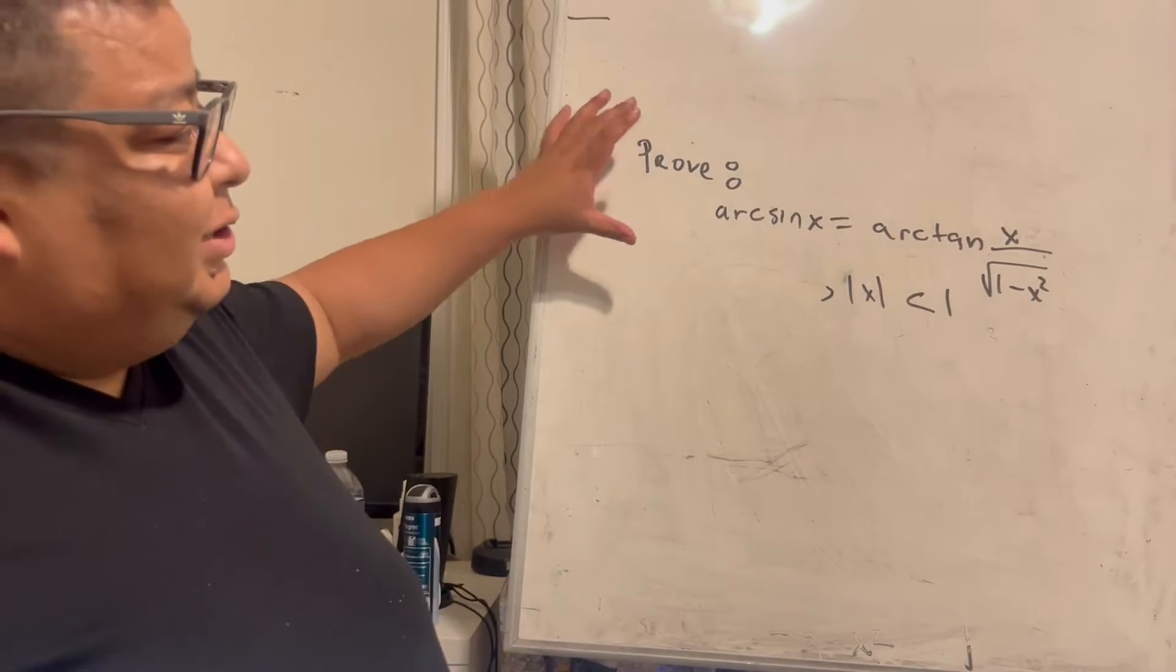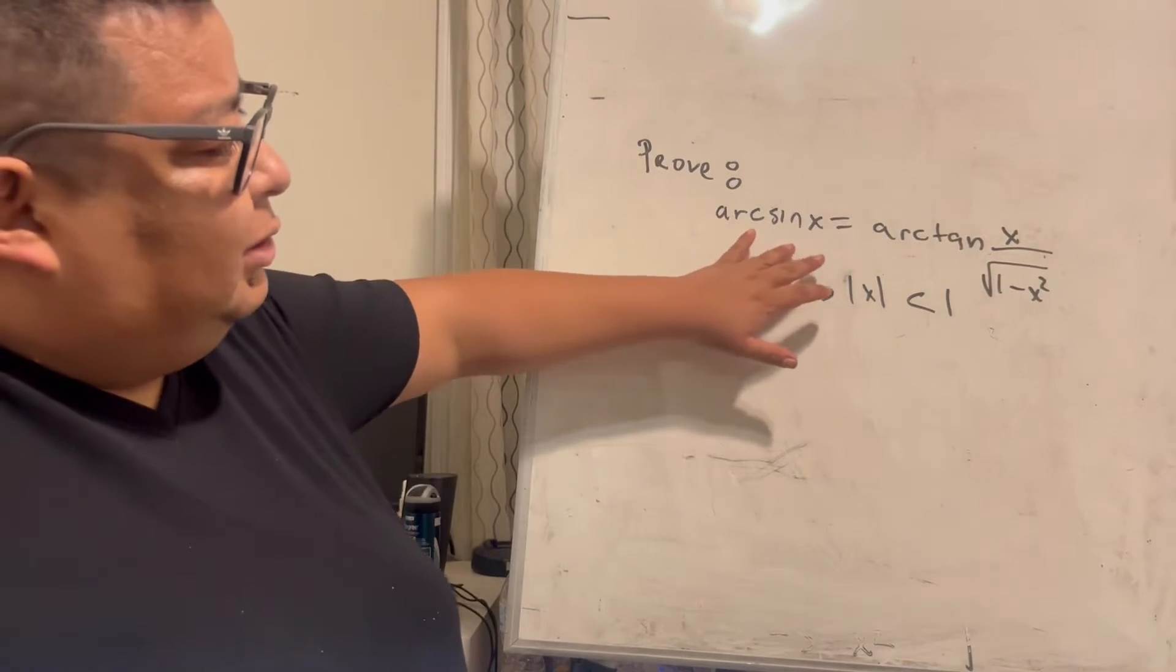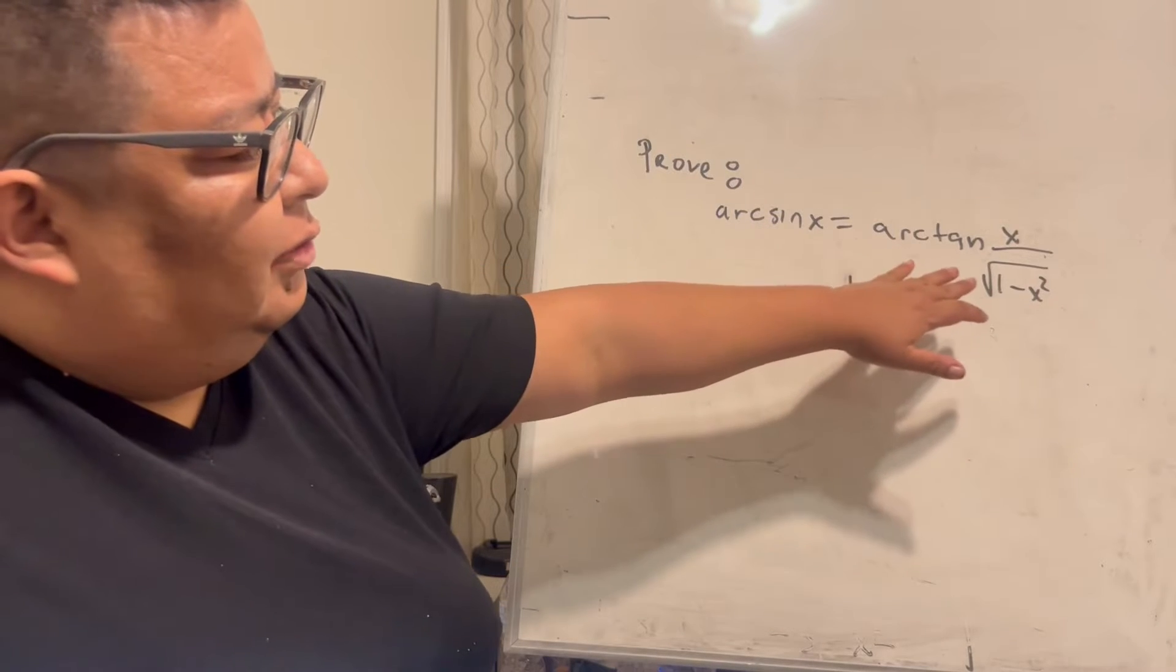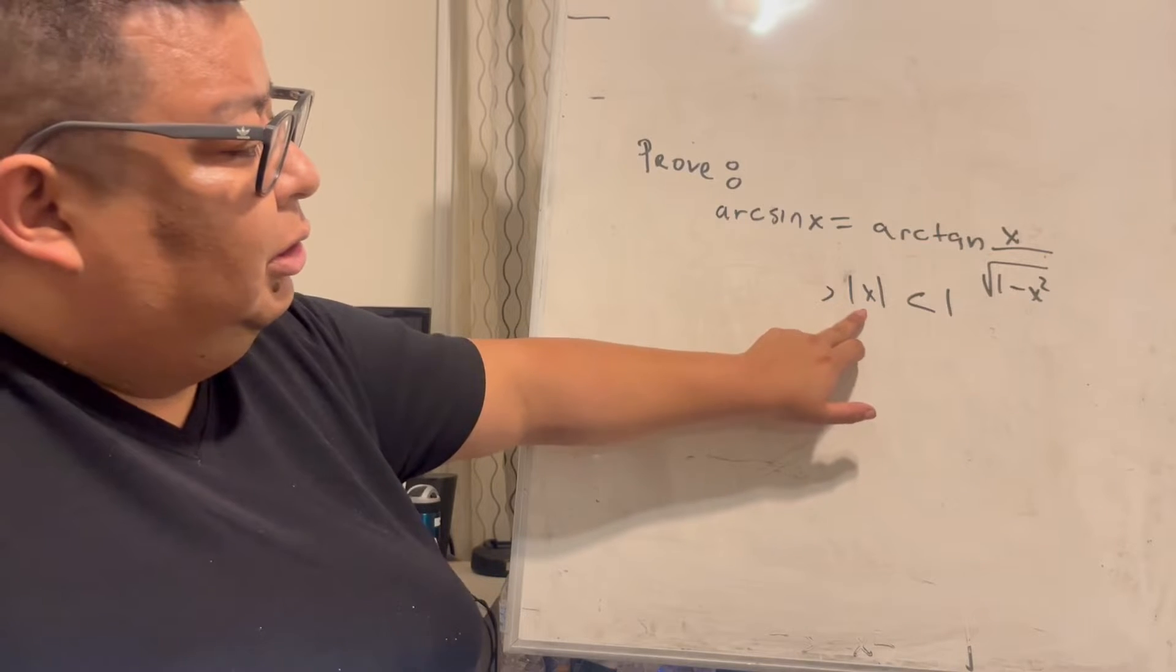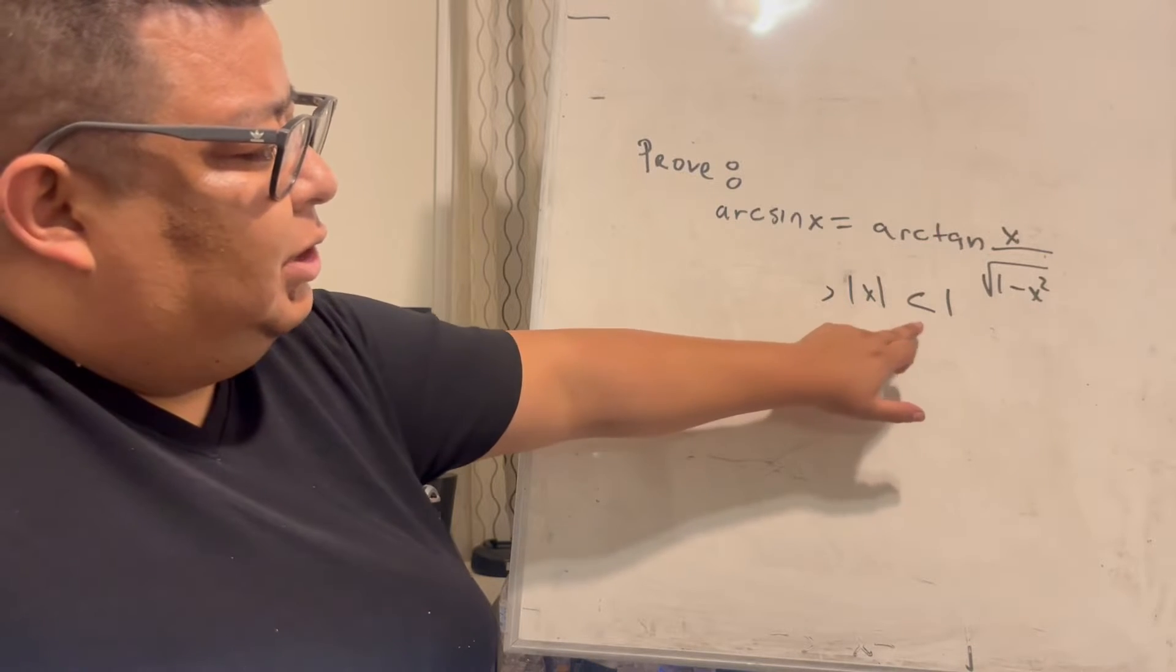Welcome. In this video, my task is to prove that arcsin(x) is equal to arctan(x over square root of 1 minus x squared) whenever the absolute value of x is less than 1.